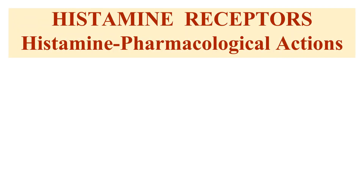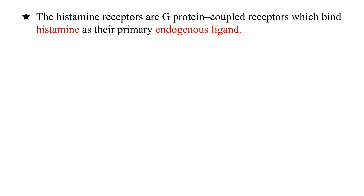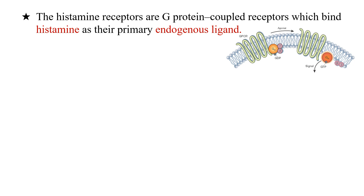In this video we will study the pharmacological actions of histamine. To know the pharmacological actions of any natural ligand like hormones or neurotransmitters such as histamine, you need complete knowledge about their receptors. Histamine receptors are G-protein coupled receptors which bind histamine as their primary endogenous ligand, so histamine binds to histamine receptors to produce the effect or response.